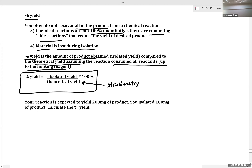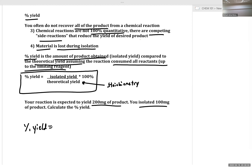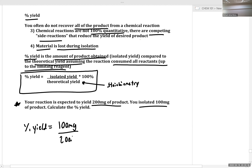Percent yield is the isolated yield over the theoretical yield, and the theoretical yield you calculate using stoichiometry. To give an example, if your reaction is expected to yield 200 milligrams of product and you isolate 100 milligrams, what is our isolated yield? 100 milligrams isolated. What is our theoretical yield? 200 milligrams. So if we multiply by 100%, we get a percent yield of 50%.